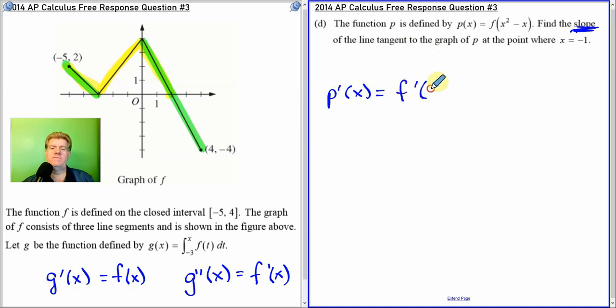So it would be f'(x² - x) times the chain rule. So the derivative of what's inside is 2x - 1. And now I'm just plugging in negative one. f' of - so negative one squared is one. One minus negative one is two. And two times negative one is negative two. Negative two minus one is negative three. So then the question is what's f'(2)?